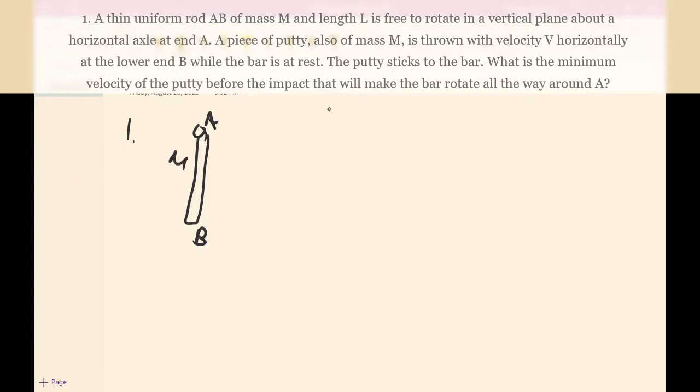It has mass M, length L, and there's another mass M here that strikes the B with velocity V. So we want to find this minimum V such that the bar will rotate all the way around A.